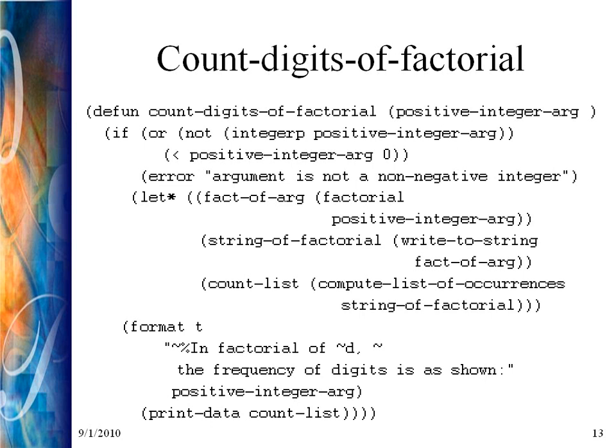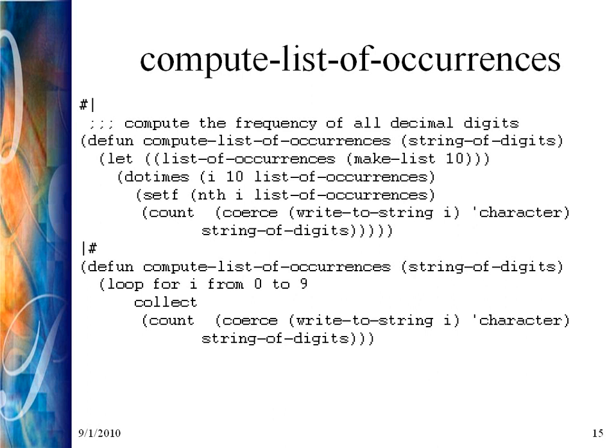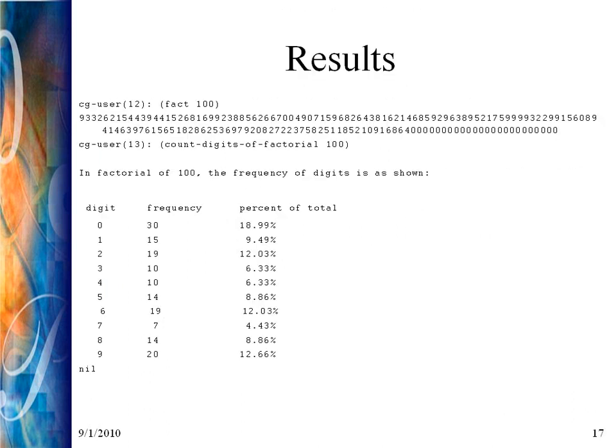The function name is count-digits-of-factorial. It takes a single argument called positive-integer-arg. You give it a value, and it does some work using a couple of auxiliary functions: one for calculating the factorial, one for counting the number of occurrences of each digit, and one for printing out the data.